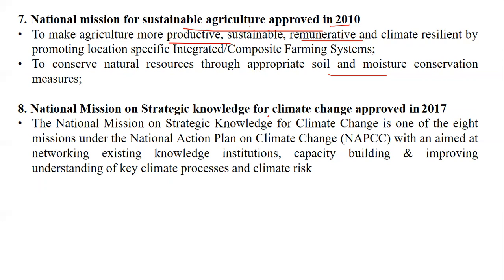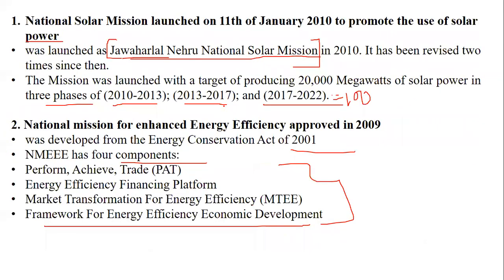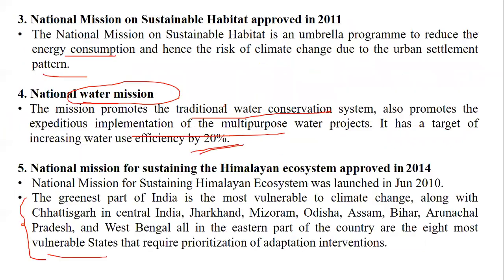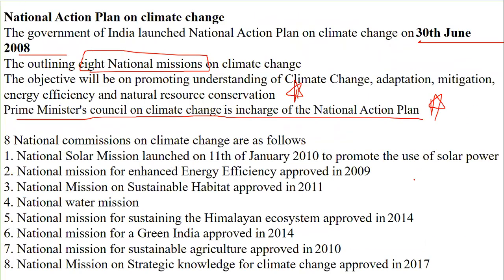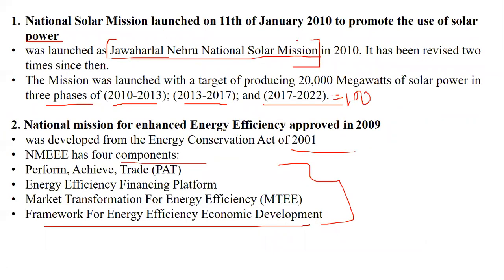The National Mission on Strategic Knowledge for Climate Change was approved in 2017 — that is the last of the eight missions under the National Action Plan on Climate Change. It is aimed at networking existing knowledge institutions, capacity building, and improving understanding of key climate processes. Every mission has something specific to speak about, and some interior areas of the missions have not been covered in earlier questions, which have been covered here.